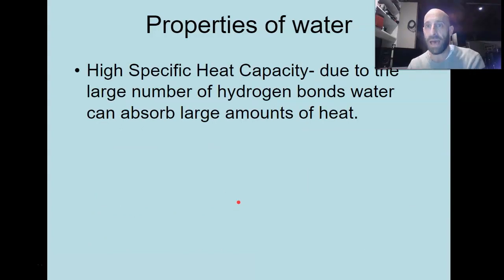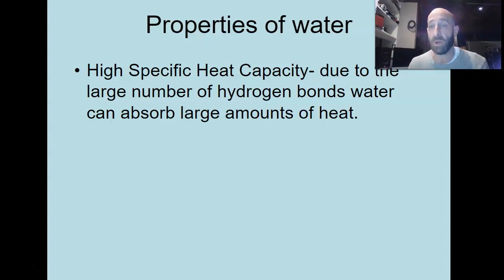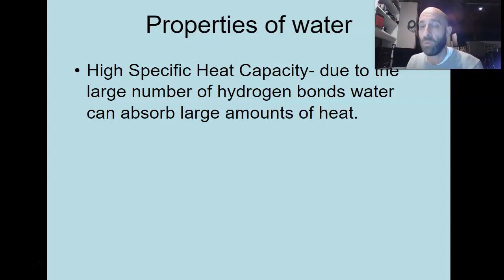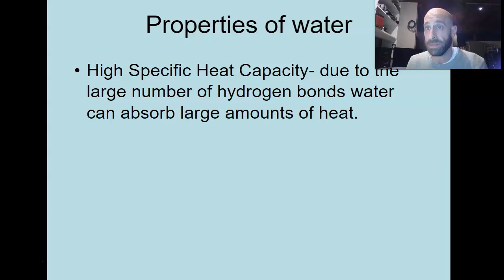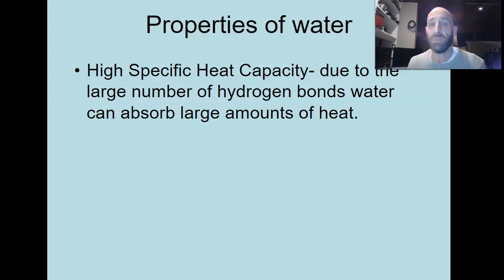Water has a very high specific heat capacity. Specific heat is simply how much energy something can absorb. Water can absorb a lot of energy before it goes up in temperature. The reason the Earth is able to keep its temperature is because it's covered with mostly water — about 70% water — and that water absorbs all that heat. In summertime and winter, the water near the shore is warmer than the air because water holds onto heat. It's also why our bodies hold onto heat. Those hydrogen bonds can hold a lot of energy — energy is absorbed and held in bonds — and that allows water to hold onto a lot of excess heat.